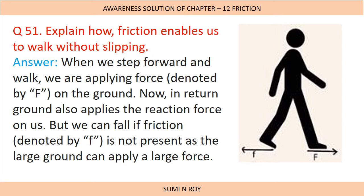Next question: Explain how friction enables us to walk without slipping. When we step forward and walk, we apply a force on the ground, and in return the ground also applies a reaction force on us — for every action there is an equal and opposite reaction. In the absence of friction, the force applied by the ground would cause us to slip and we cannot walk properly. Friction helps us by balancing the force exerted by the ground on our foot, so we can walk steadily.